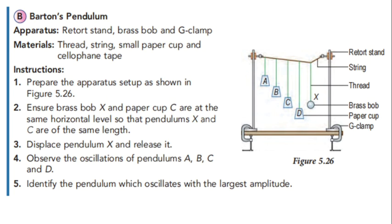Observation: When pendulum B oscillates, the other pendulums also start to oscillate. Pendulum X, the brass bob X, oscillates with maximum amplitude. The oscillation of pendulum B is transmitted along the supporting string.